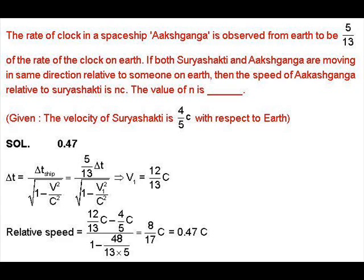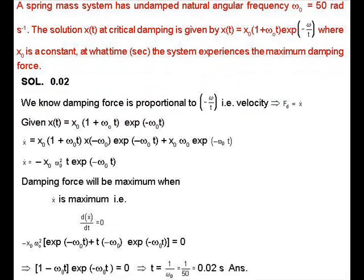We take Suryashakti in the rest frame. The velocity of Aakashganga with respect to Suryashakti equals (12c/13 - 4c/5) divided by (1 - 48/(13×5)), which equals 0.47c. So the answer is 0.47c.